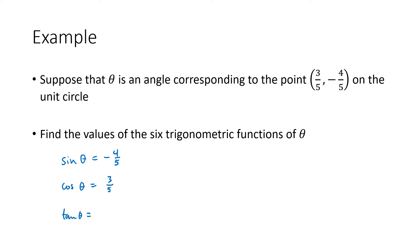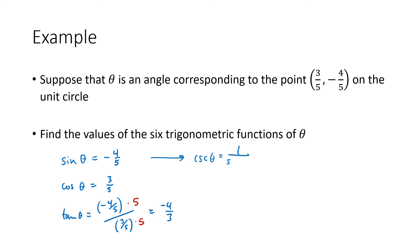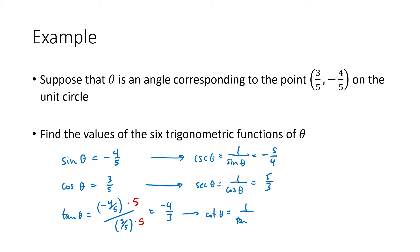Tangent is b divided by a, so that's (-4/5) divided by (3/5). Multiplying top and bottom by 5 clears the denominators, giving us -4/3. The cosecant of theta is the reciprocal of the sine, so instead of -4/5, we get -5/4. The secant of theta is the reciprocal of the cosine, so 1 over (3/5) equals 5/3. And the cotangent of theta is the reciprocal of the tangent, so instead of -4/3, that gives us -3/4.